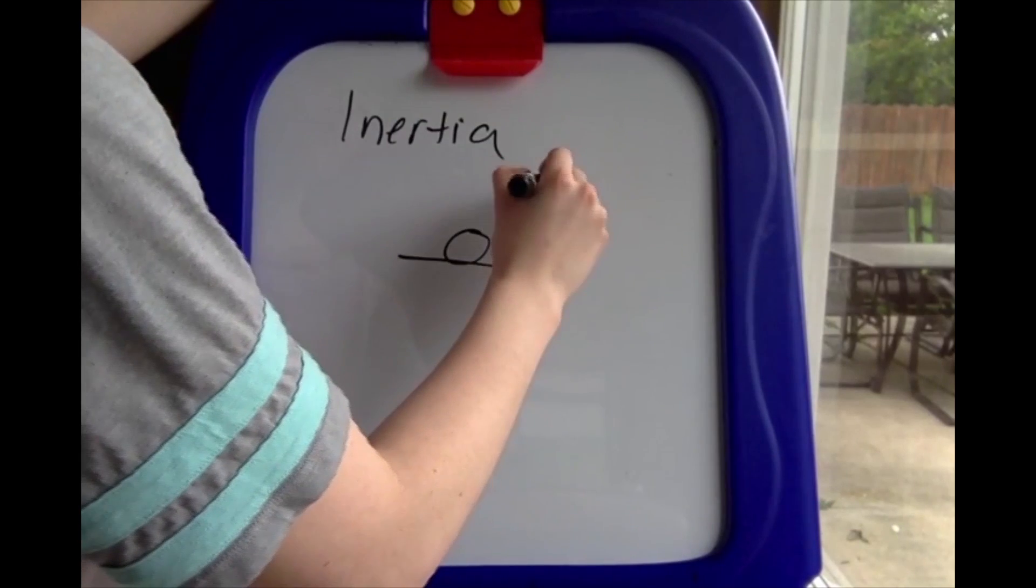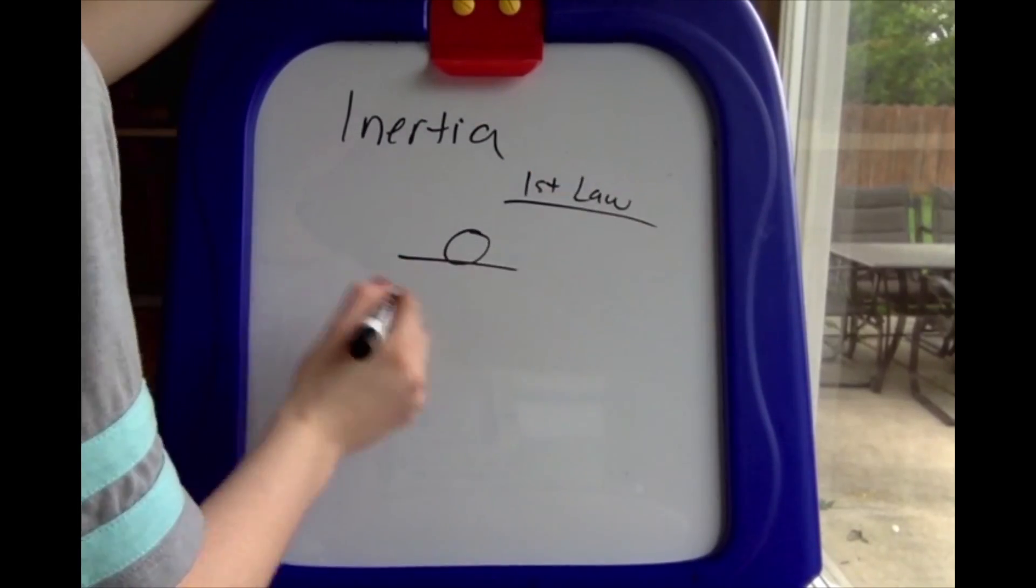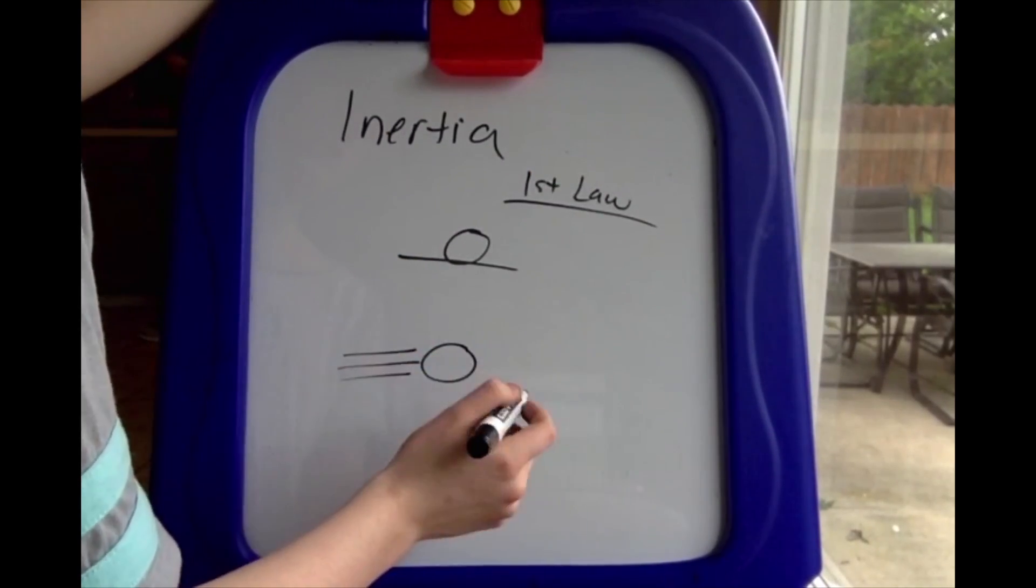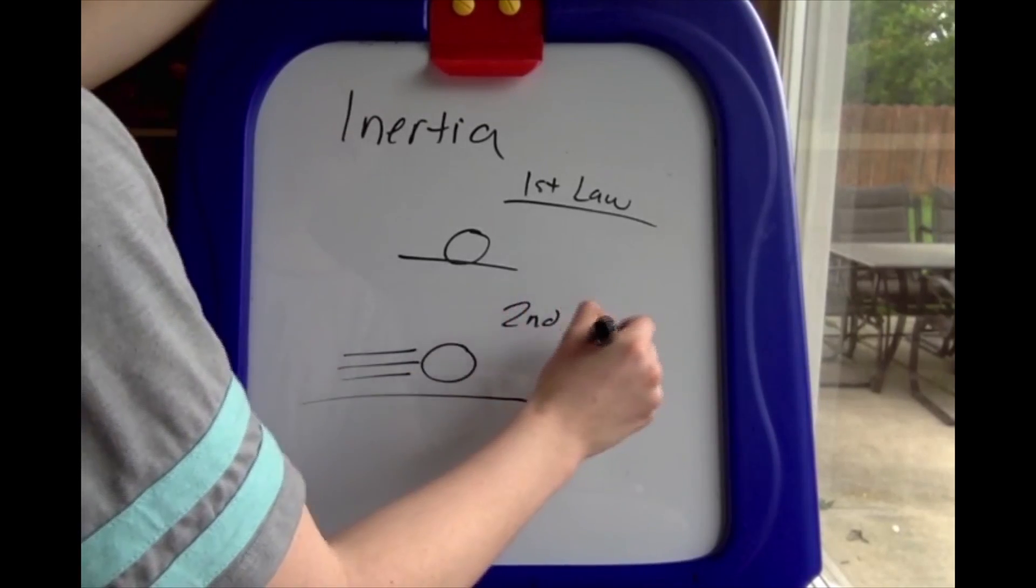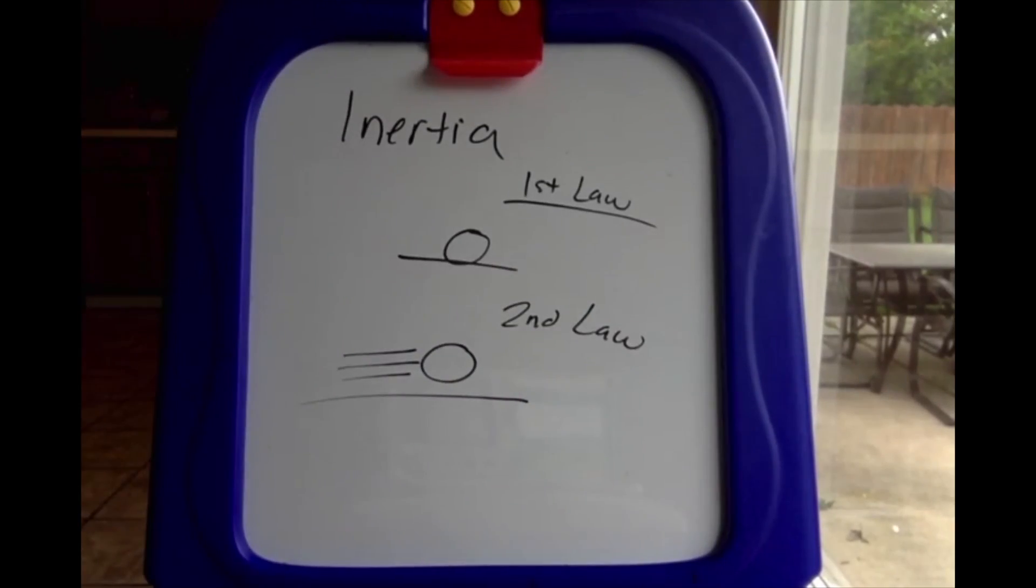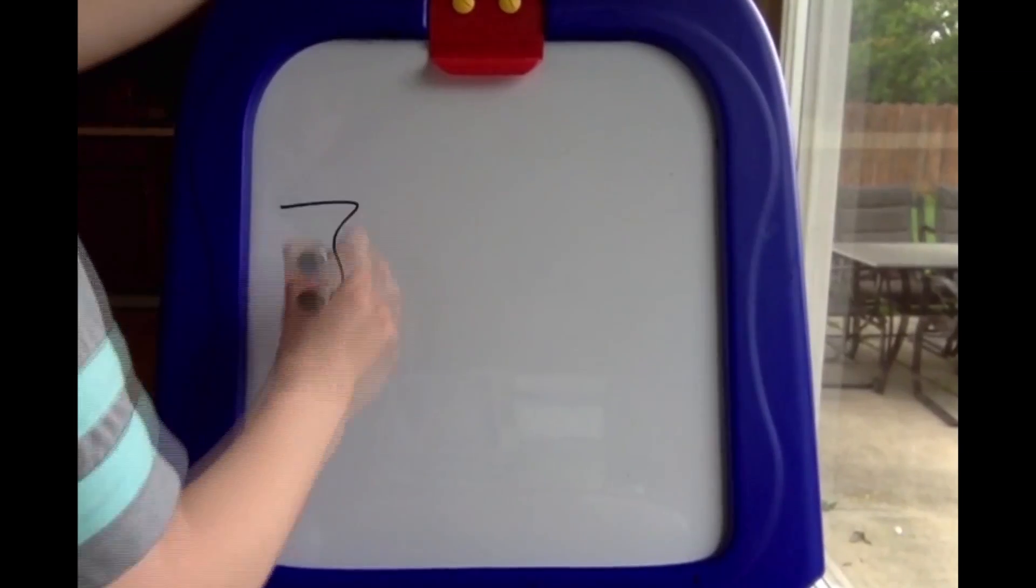inertia is the tendency of matter to remain at rest, if at rest, or if moving, to keep moving in the same direction. Unless affected by some outside force required, the object would keep moving in motion.